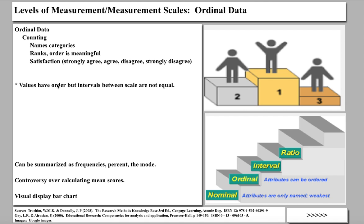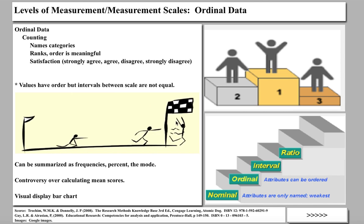However, the values do have order, but the intervals between the scales are not equal. In a race, first, second, and third place finishers: second place may have been very close to first place, whereas third place was far behind. So the intervals between the data points in ordinal data are not necessarily equal. Like nominal data, since it's one of the two counting types, it can be summarized as frequency or percent, and generally the mode is the statistic of central tendency — the number that appears the most.